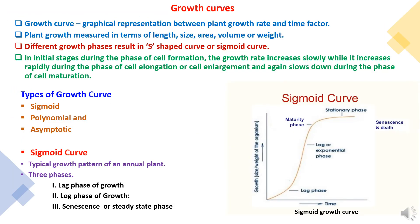Now we will focus on growth curves during the plant life cycle. A growth curve is a graph obtained by plotting the growth rate of a plant against the time factor. The growth rate of a cell, a whole plant, or the whole life cycle of a plant is measured in terms of length, size, area, volume, or weight. Different growth phases result in an S-shaped curve, which is known as the sigmoid curve.